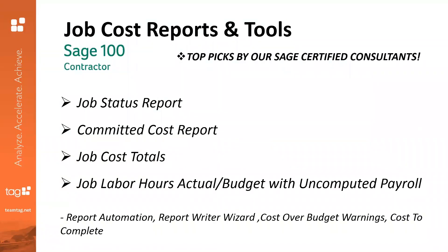We'll jump right in. We'll talk about all of the different reports that might be helpful in relation to job costs. We'll also talk about a couple of tools equipped within the modules of Sage 100 Contractor — things like report automation, the Report Writer, cost over budget warning, and the cost-to-complete tool. We'll also feature a couple of the top picks by our Sage-certified consultants.